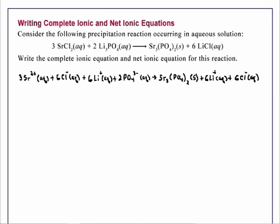We will now cancel any species that occur on both sides of the equation. We have 6 chlorides on both sides, we have 6 lithiums on both sides, and we will write what remains, which is 3 strontium 2+ ions aqueous plus 2 phosphate PO4 3- ions aqueous reacting to form solid Sr3(PO4)2.